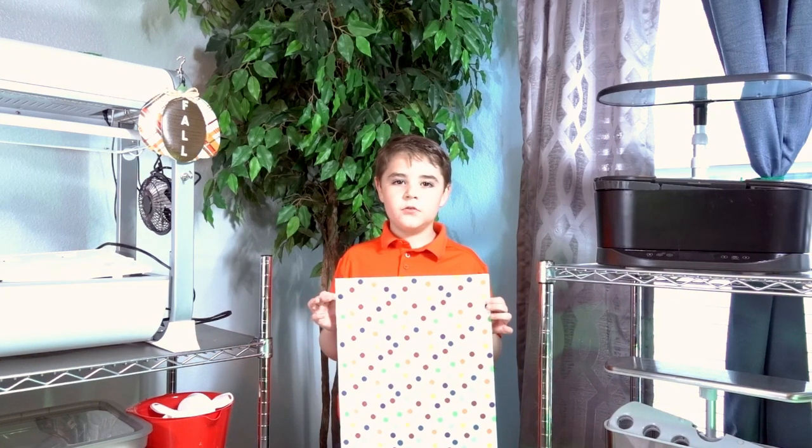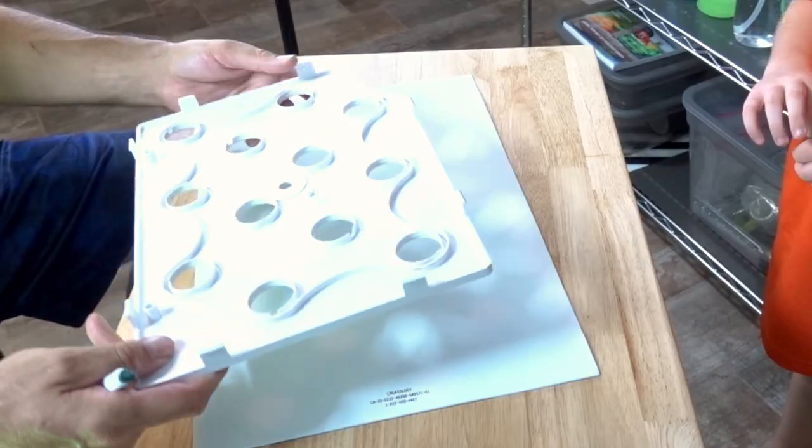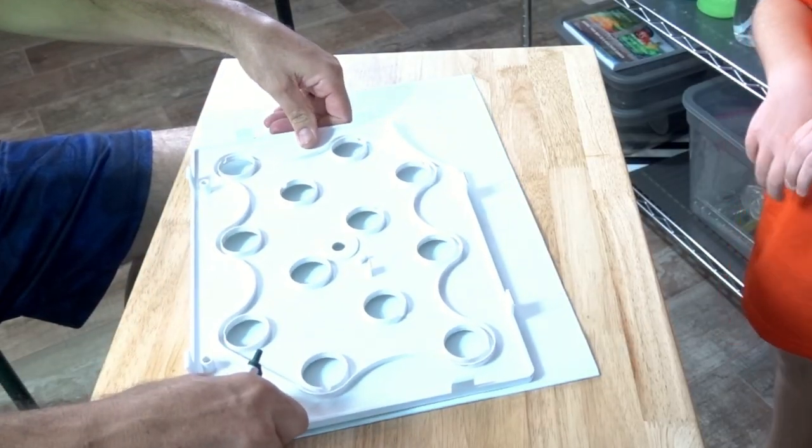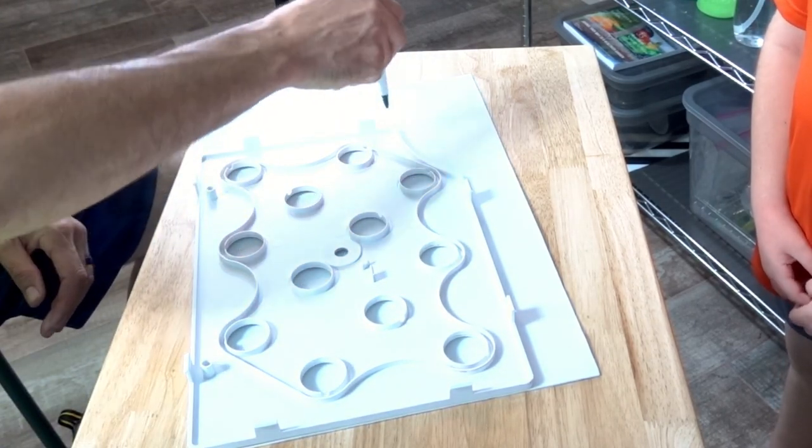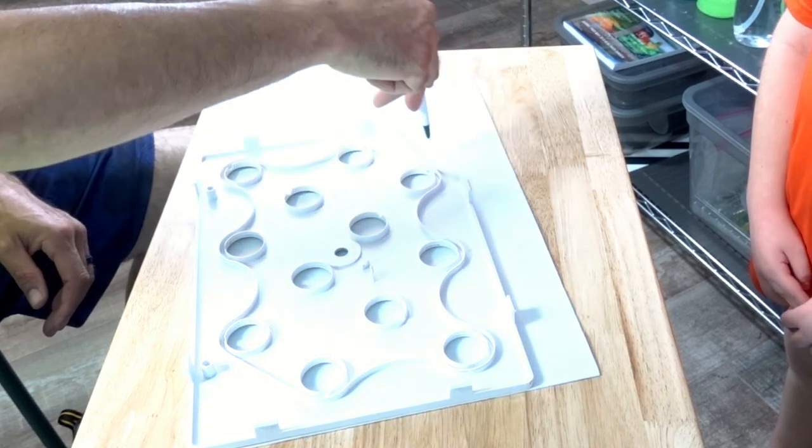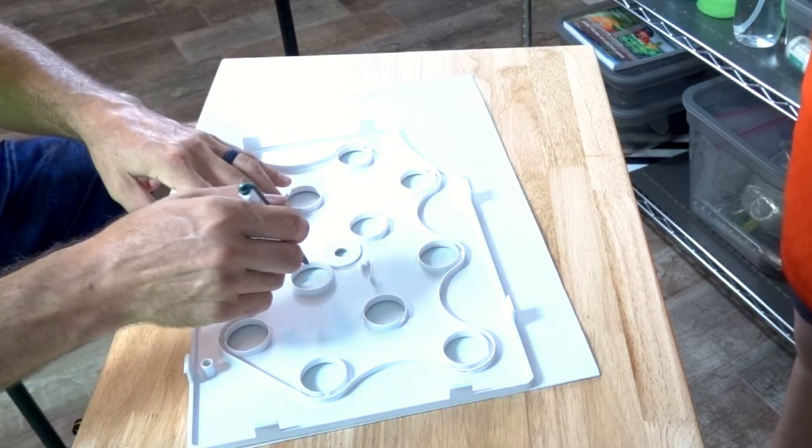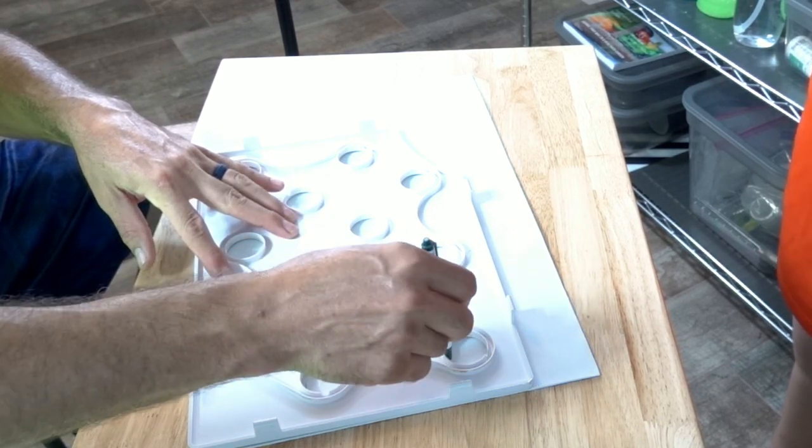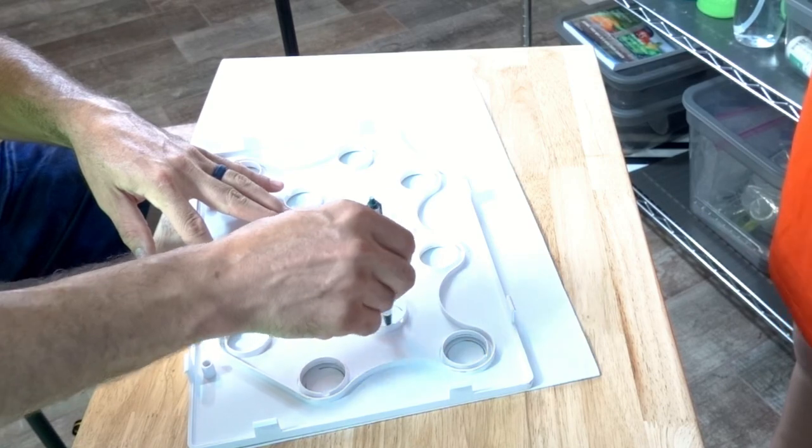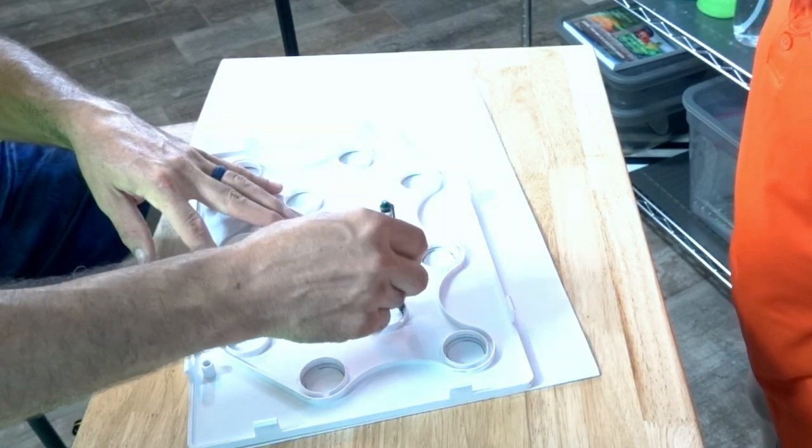The best way to do that is to put the cover over it and make a trace on it. This is where we're going to take the tray and put it on the corner so we can see. Now we only have to cut just the three sides, right? We don't have to cut this side. What we can do, go ahead and draw all our circles.